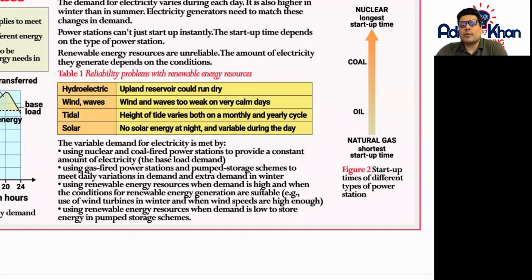Using renewable energy resources when demand is high and when the conditions for renewable energy generations are suitable, for example, the use of wind turbines in winter and when wind speeds are high enough. Using renewable energy resources when demand is low to store energy in pumped storage schemes. Energy which is generated through coal, nuclear and gas can be stored on those particular days when renewable energy is on a low and then we can use that surplus energy that we've stored up on the side as well.